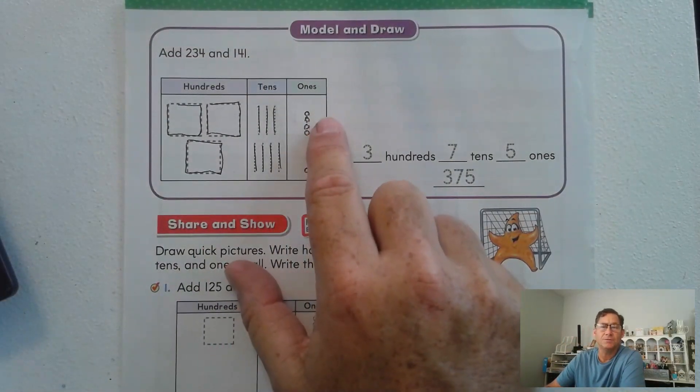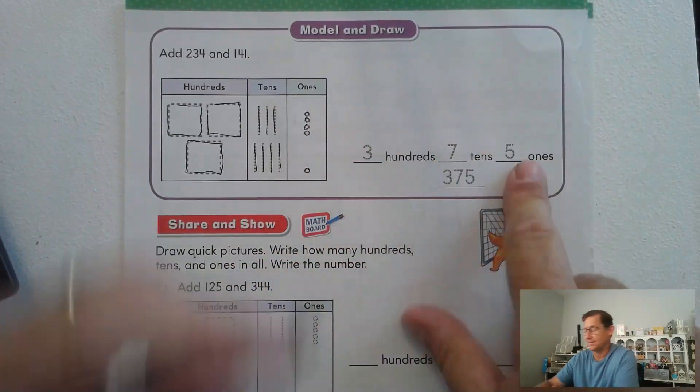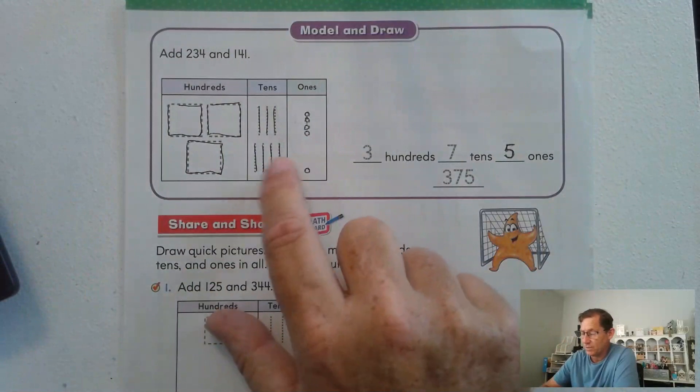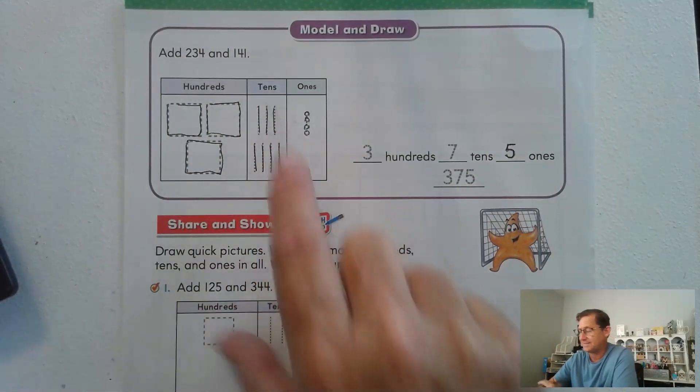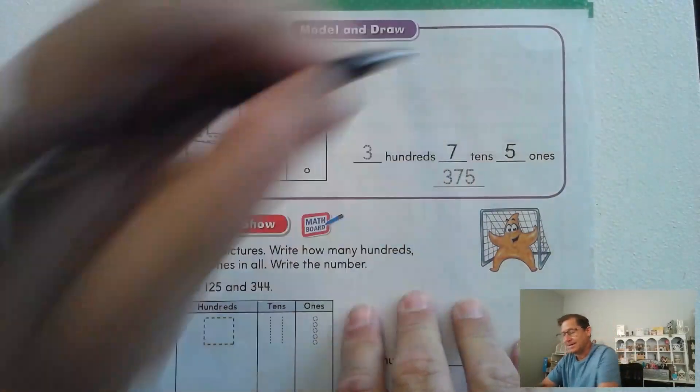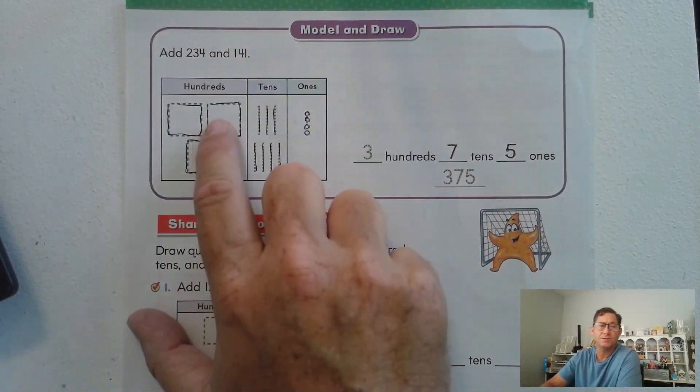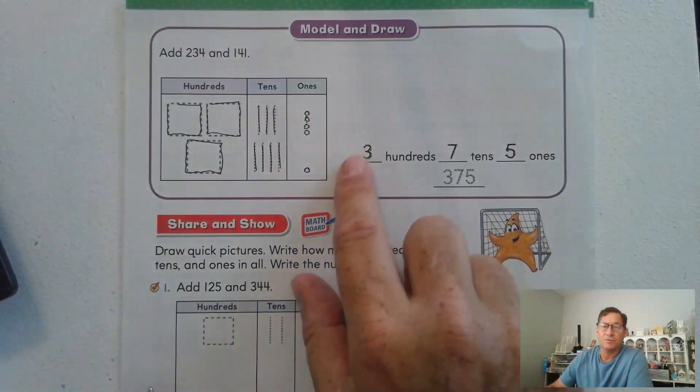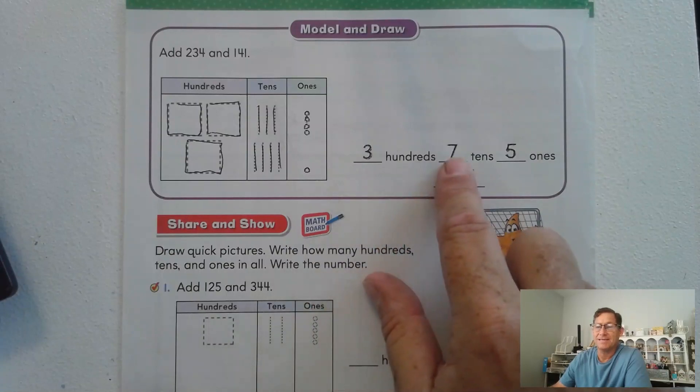All right, how many ones do we have? We have one, two, three, four, five ones. How many tens do we have? We have one, two, three, four, five, six, seven tens. And how many hundreds do we have? One, two, three. So if we put that together, we would say 375.